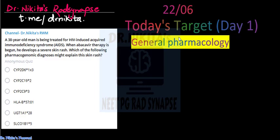So I thought of discussing this question, which is a very important topic, that is pharmacogenomics - the various cytochromes and the drug metabolism genes which can be mutated, that could be decreased or increased function, and that can lead to altered drug concentration. So let us have a look at the question which was posted in our telegram channel and group Dr. Nikita's Rad Synapse. Make sure that you follow the daily polls and the targets if you really want to crack NITPG.